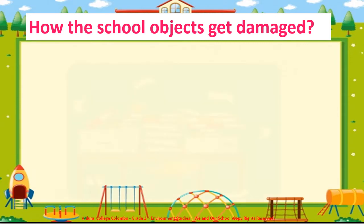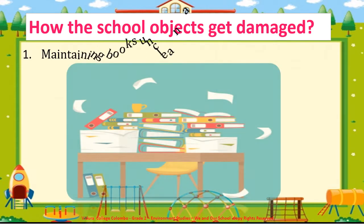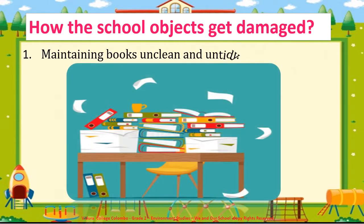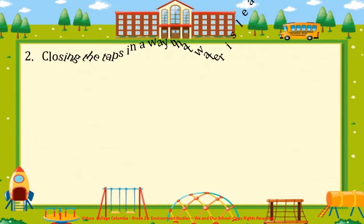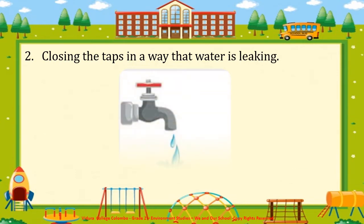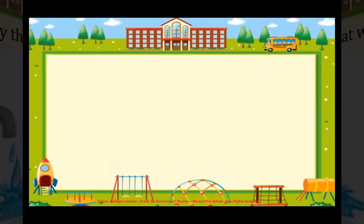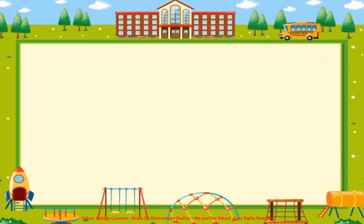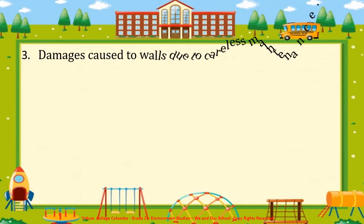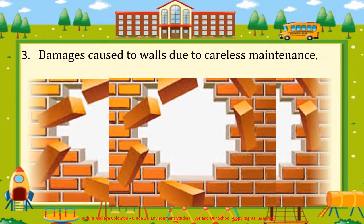Number 1: Maintaining books unclean and untidy. Number 2: Closing the taps in a way that water is leaking. Number 3: Damages caused to walls due to careless maintenance.